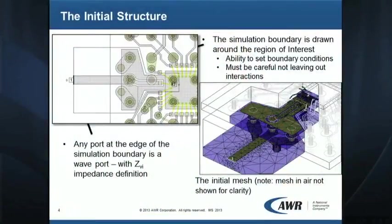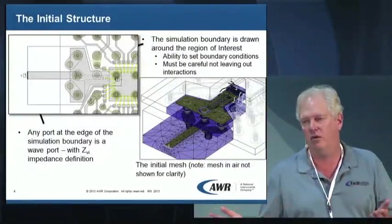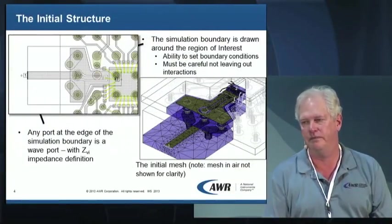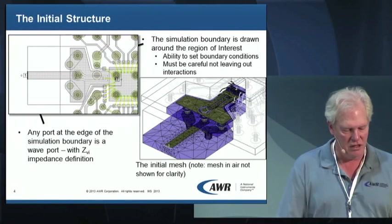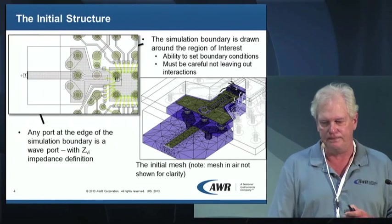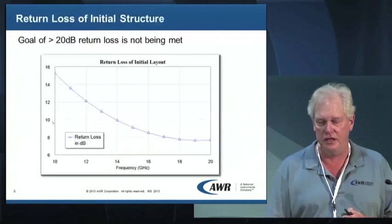We're trying to set things up in a reasonable way. There is a port 2 at the end of that bond wire — it's an internal port because it's not at the edge of the box. You throw it there, and it's automatically a circuit port, all ready to go. So you're not sitting there fiddling with all these settings.